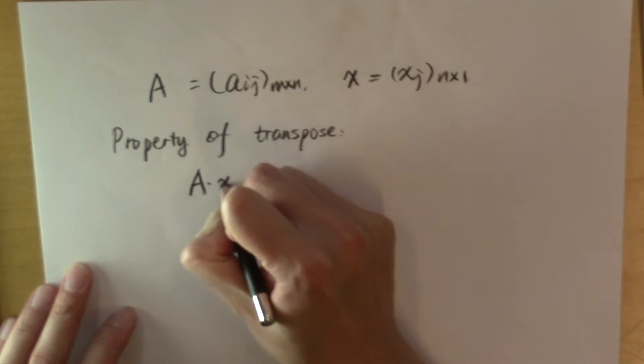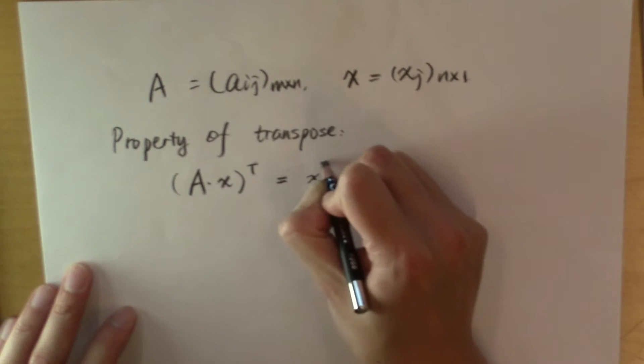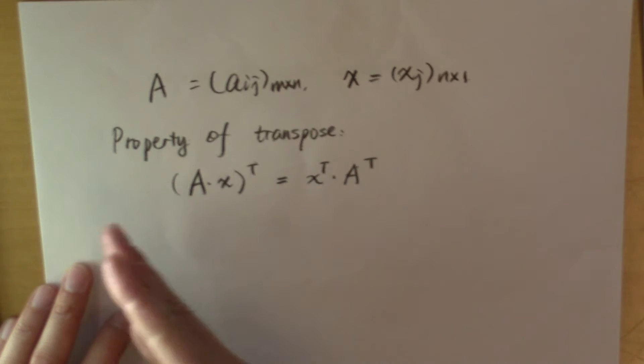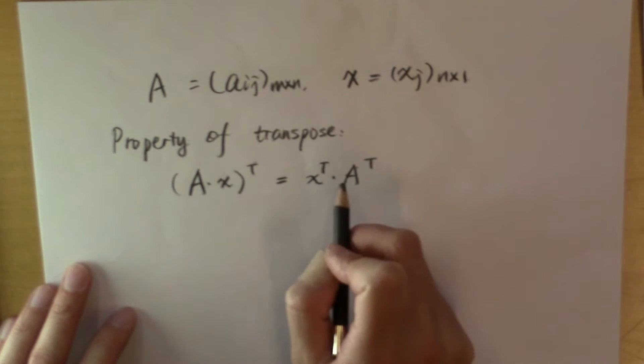A times X, its transpose is equal to X transpose multiplying A transpose. You can check the dimensions and you'll see that it will all work out. I'll leave it to you to verify that this is true.